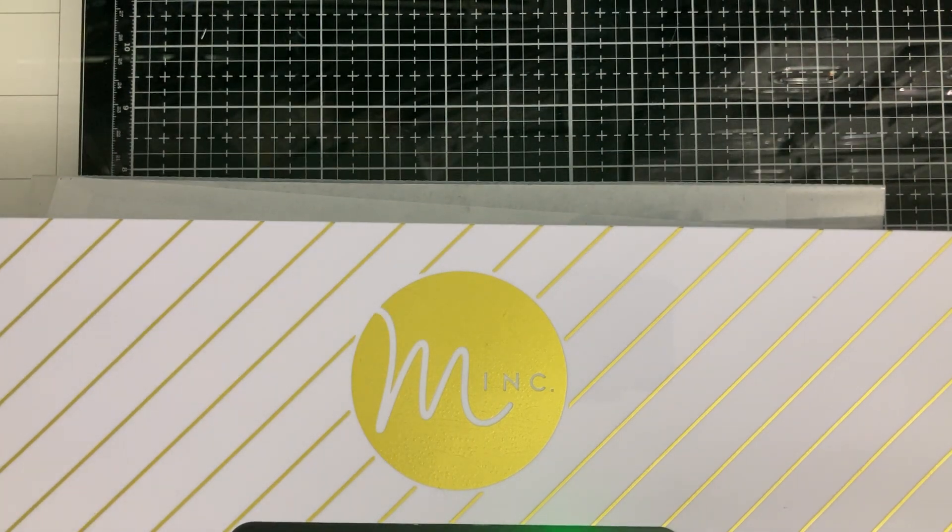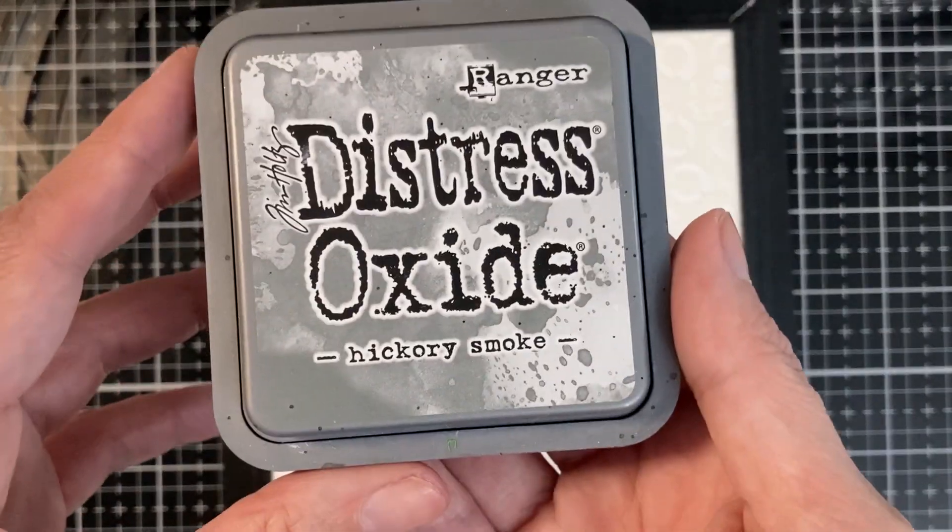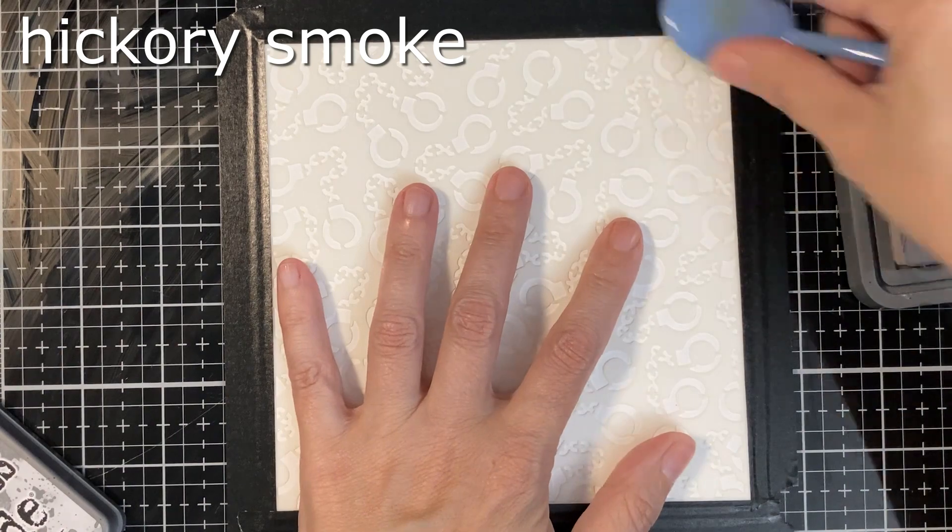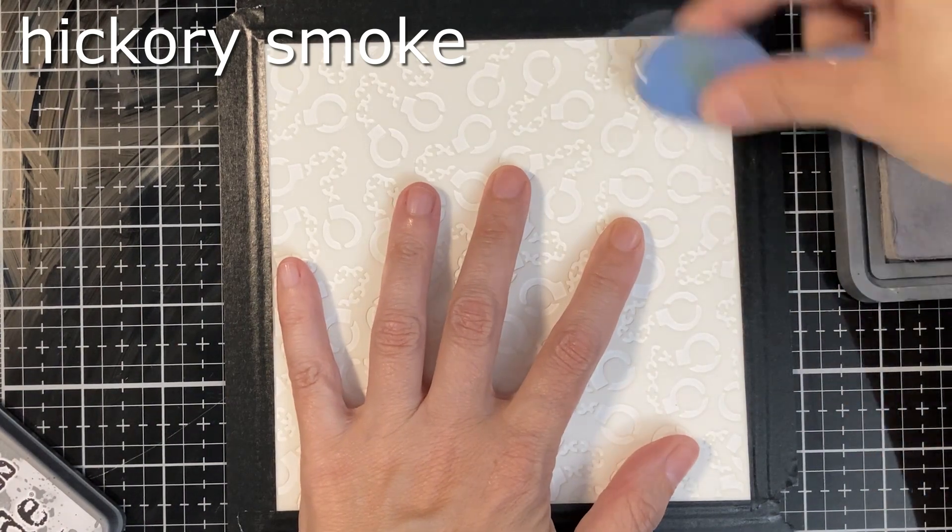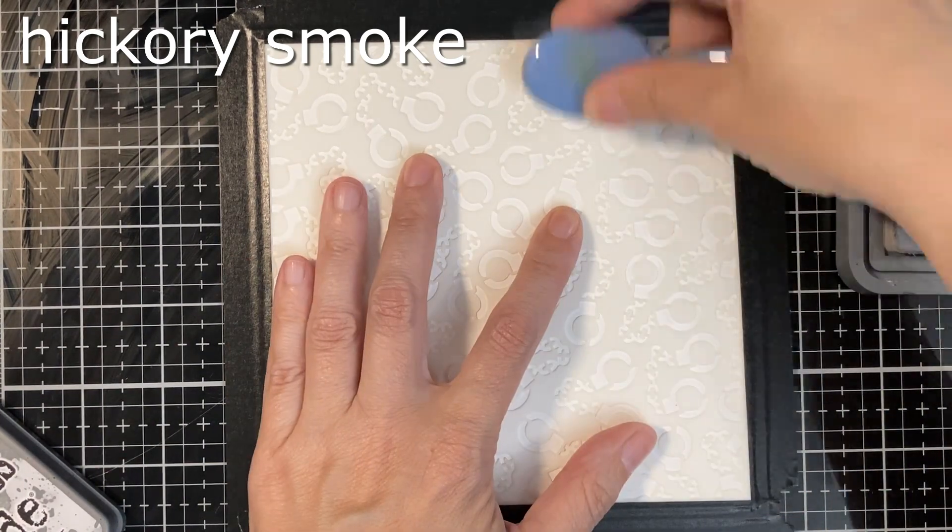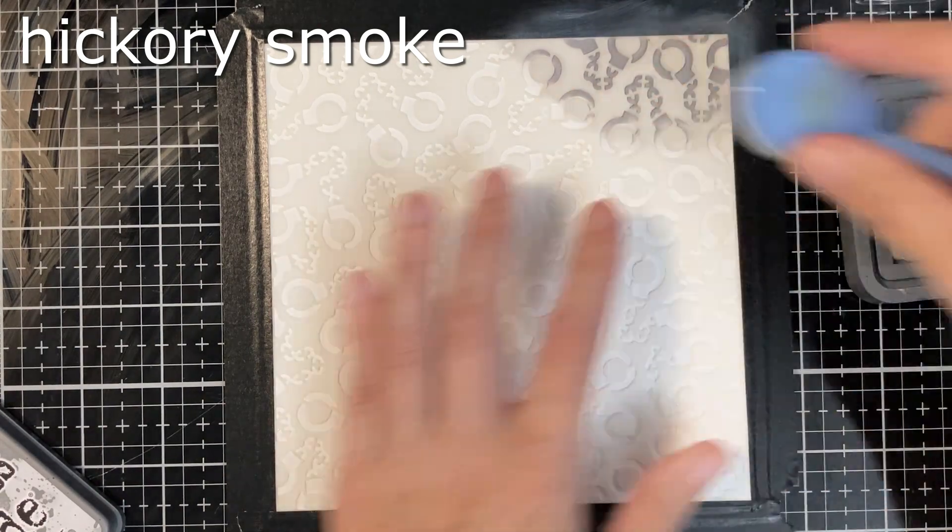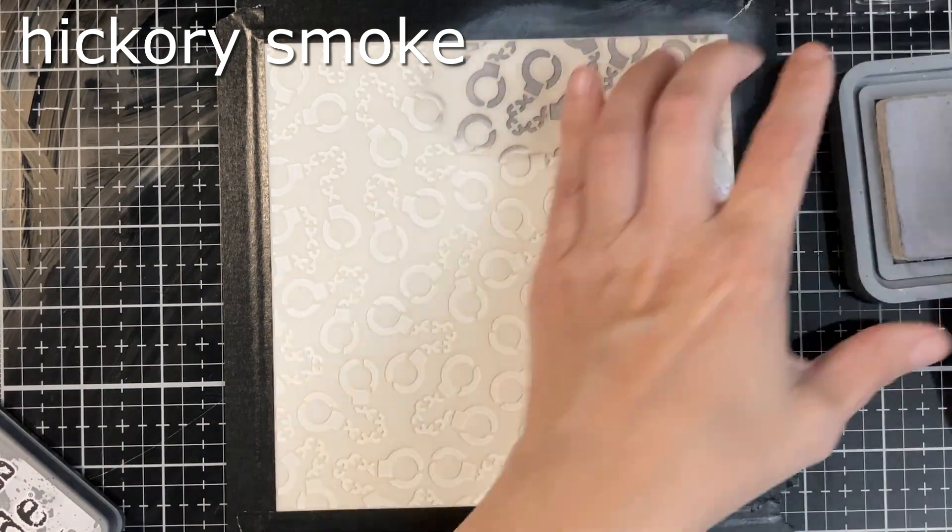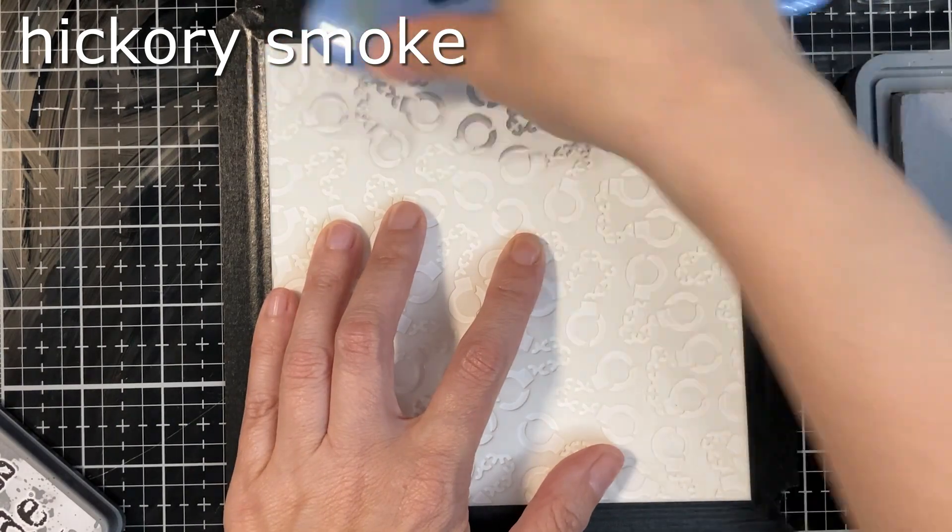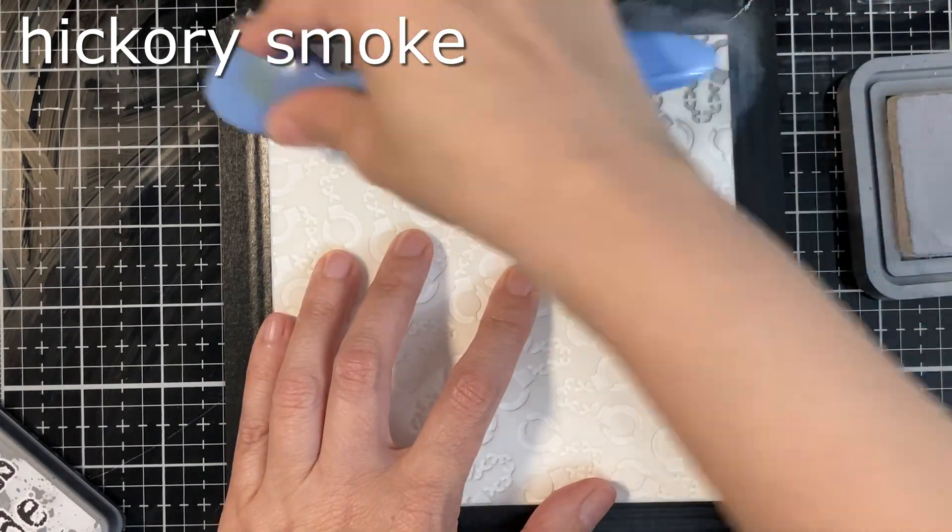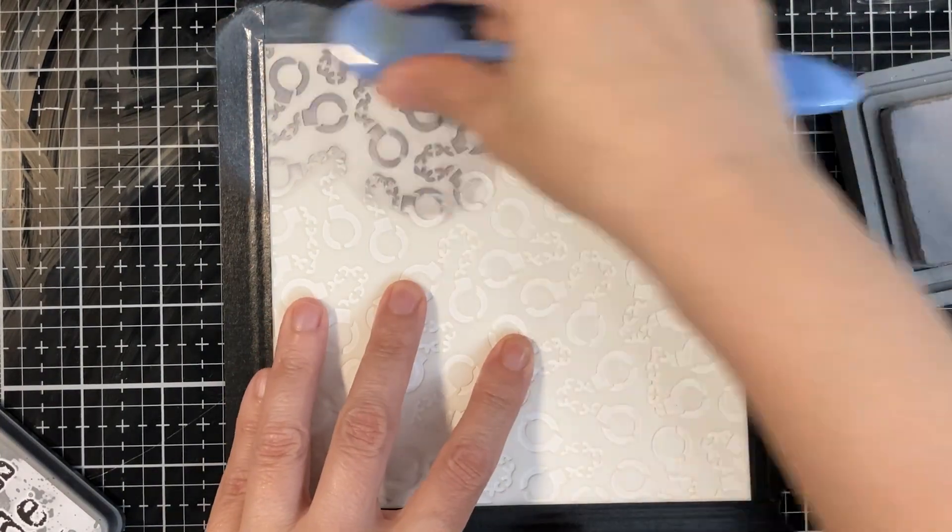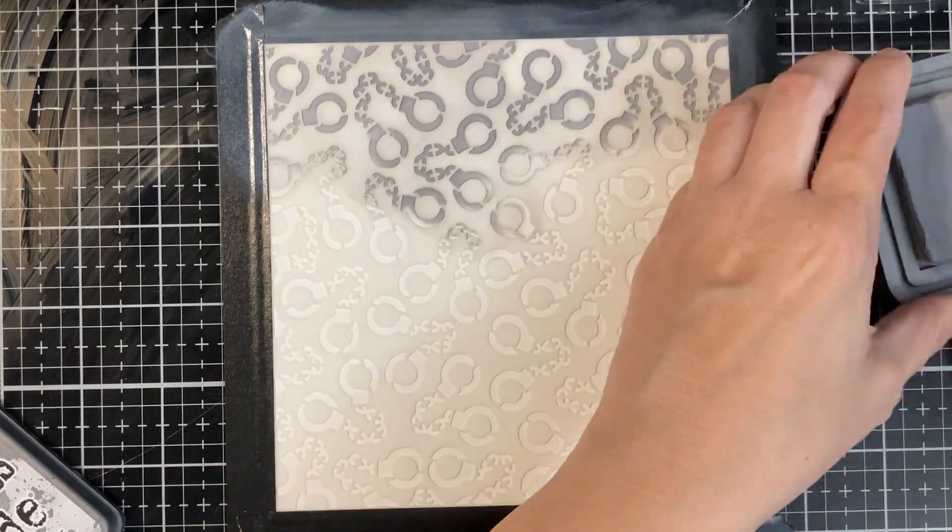I'll put that one aside and we'll go to the next one. Here is their Hickory Smoke and I'm just gonna do the whole background with that. So one's gonna be foil and one's just gonna be distress oxide. I find that when you do the foiling it's a little easier. You put the paste down really quick, peel it off, and then just put your foil on top, pass it in your machine. Easy peasy.